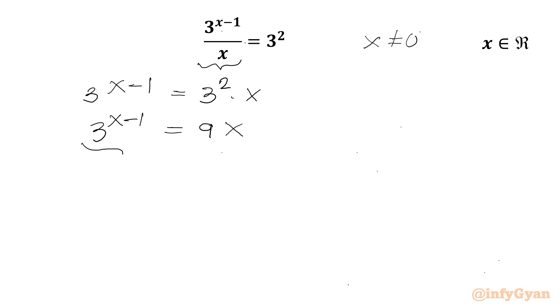If we see the left hand side is an exponential function, so it will be always positive. So for real solutions, right hand side should also be positive. Conclusion is x should be greater than zero only.